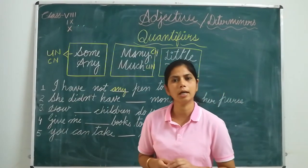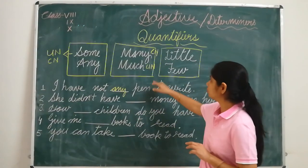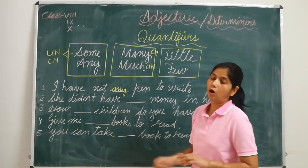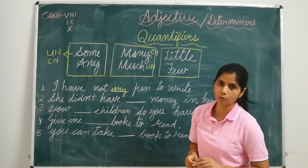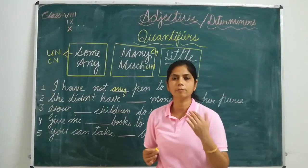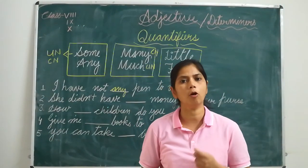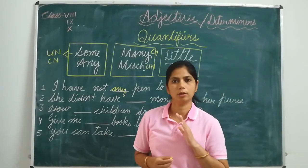With uncountable nouns, we use much. All abstract nouns are uncountable nouns. All nouns that are in powder form or grain form, all those are uncountable nouns.